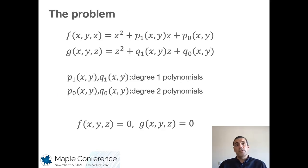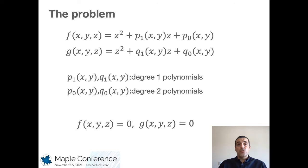From the mathematical point of view, we have two polynomials of degree 2 in the z variable, with polynomials p1 and q1 of the first degree in x and y variables, and p0 and q0 of degree 2 in x and y variables too. We define two quadrics from these two implicit equations. This case, with two second degree polynomials in z, is the most difficult to deal with and this is the only one we will restrict ourselves to.